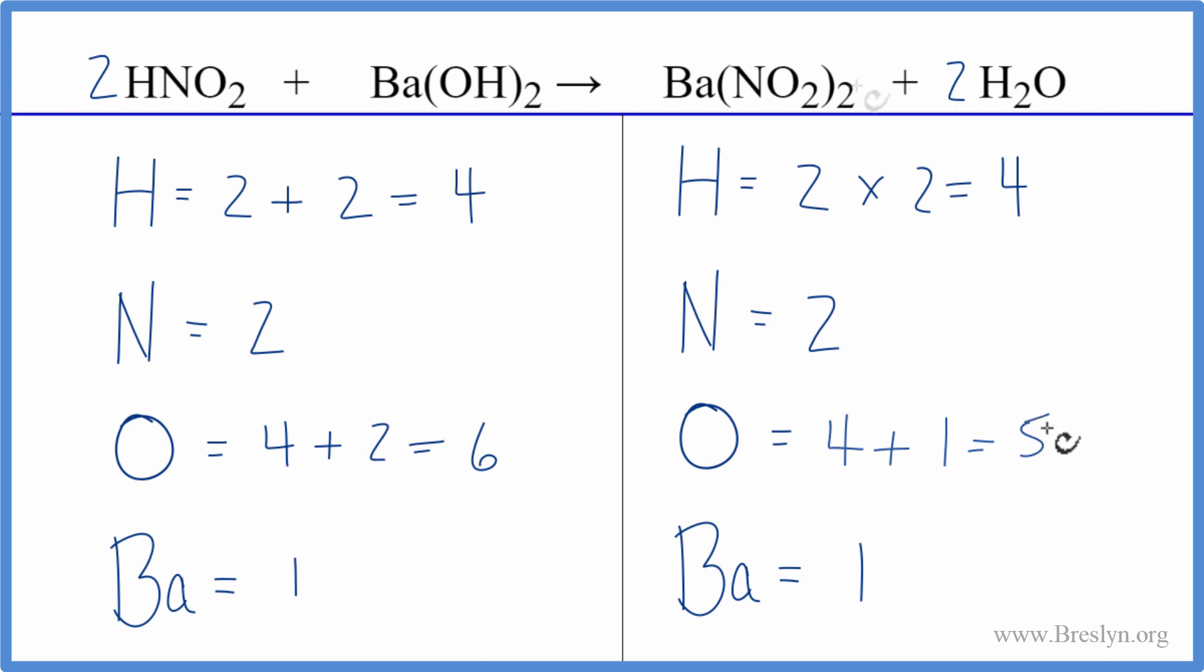Let's update the oxygens. We have two times two, that gives us four, plus one times two, that gives us two. Get a total of six oxygen atoms, and we're done. This equation is balanced.